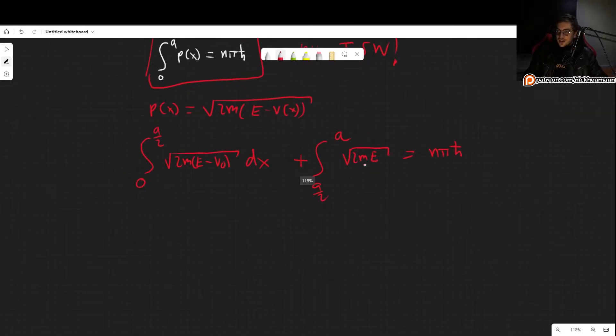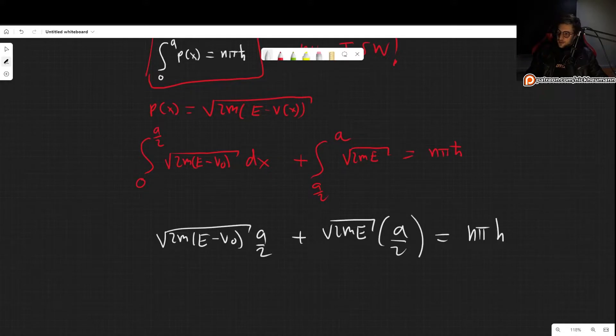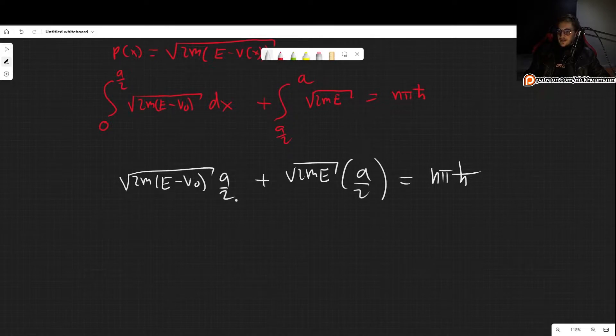Now let's solve these integrals. They are not hard at all. So we get square root of 2ME times (A minus A over 2), which is simply A over 2, plus square root of 2M(E minus V0) times A over 2. This is equal to N pi H bar. These are going to be the energy levels.